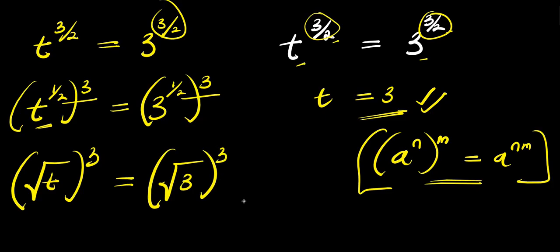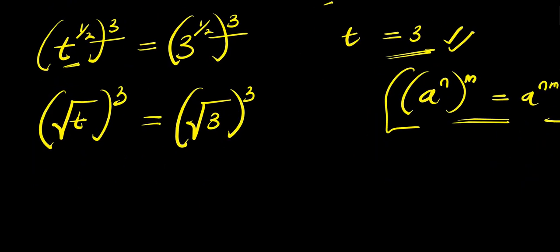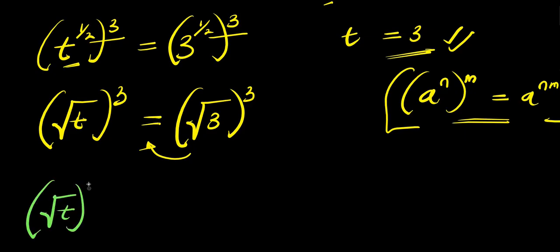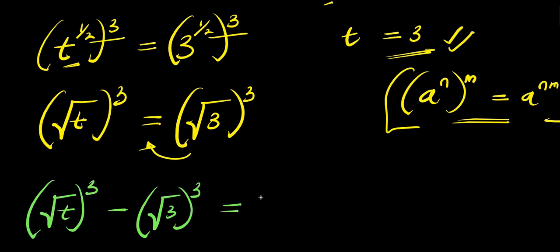What we are going to do next is move this over here — that means we are simply going to have square root of t raised to the power of 3, minus square root of 3 raised to the power of 3, and this equals 0.